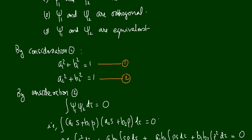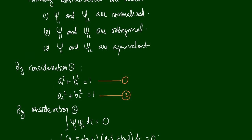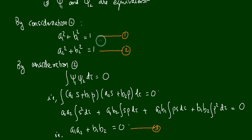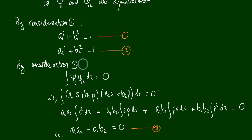From the normalization condition — integral of psi squared d-tau equals 1 — we can prove that a1² + b1² = 1, and from the equation for psi2, we can prove that a2² + b2² = 1. So we have two equations here.